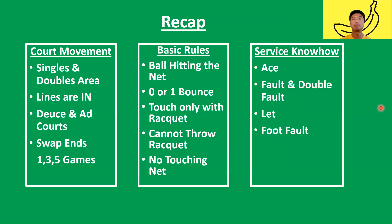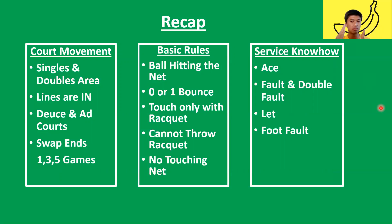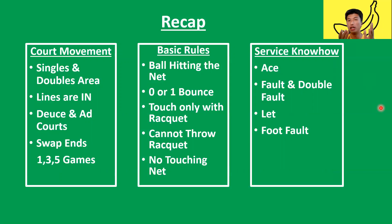Recap. Three main things we spoke about: court movement, basic rules, and service know-how. For court movement, we talked about the singles and doubles field of play, that the lines are in — if you hit the line, it is still considered in. The deuce court and ad court: if you're facing the net, everything on the right side of the center marker is the deuce court, anything on the left is the ad court or advantage court. And you have to swap ends during a set after the first game, third game, fifth game — any odd number game.